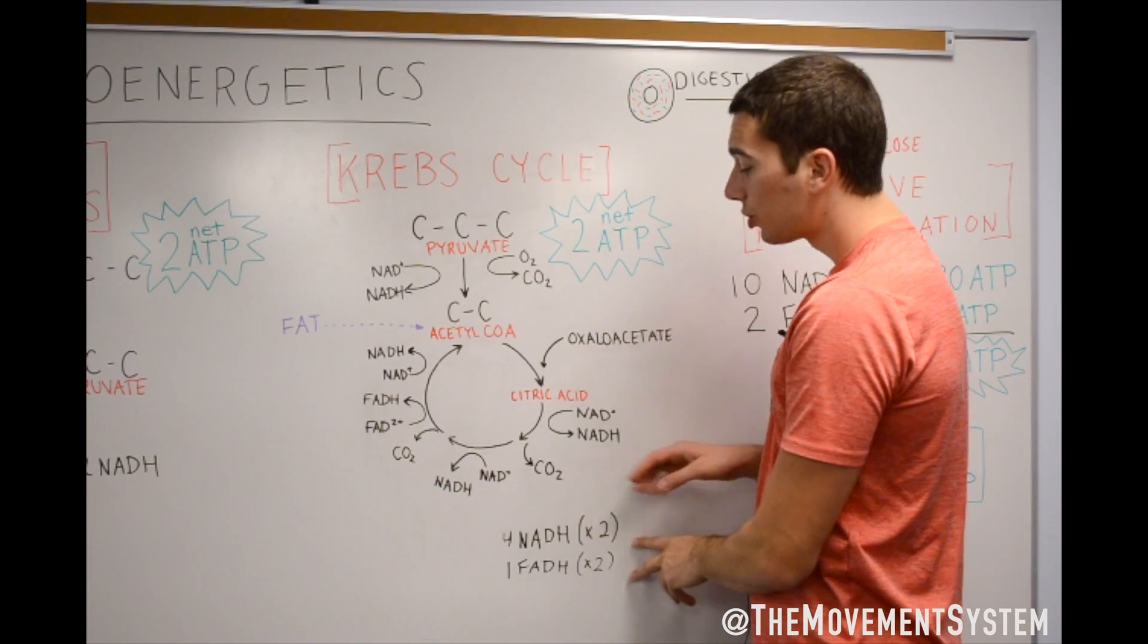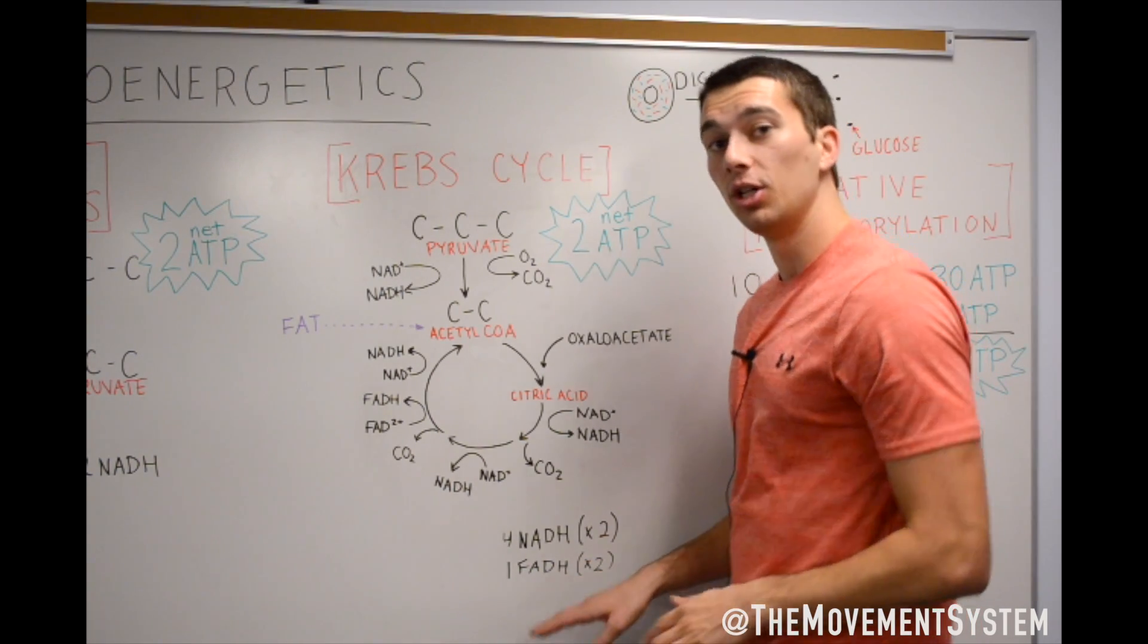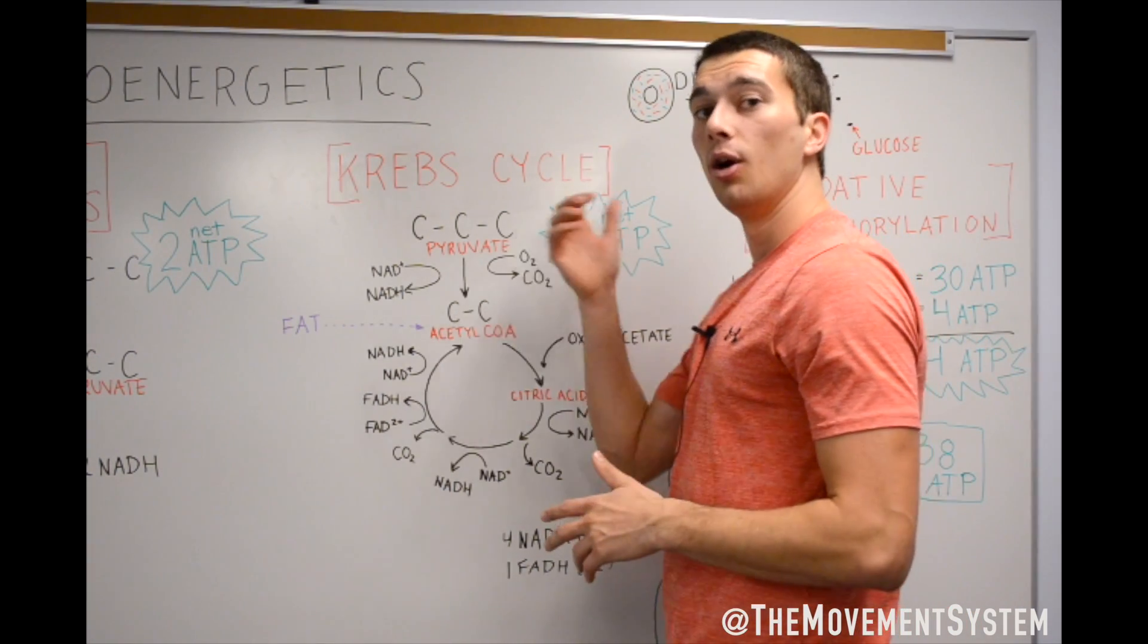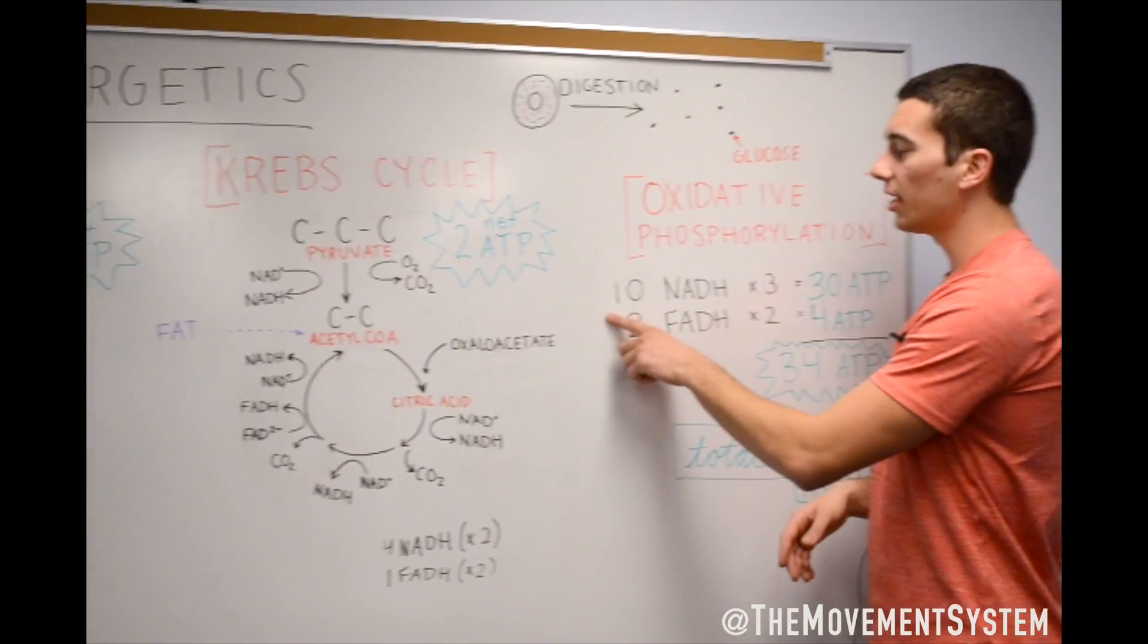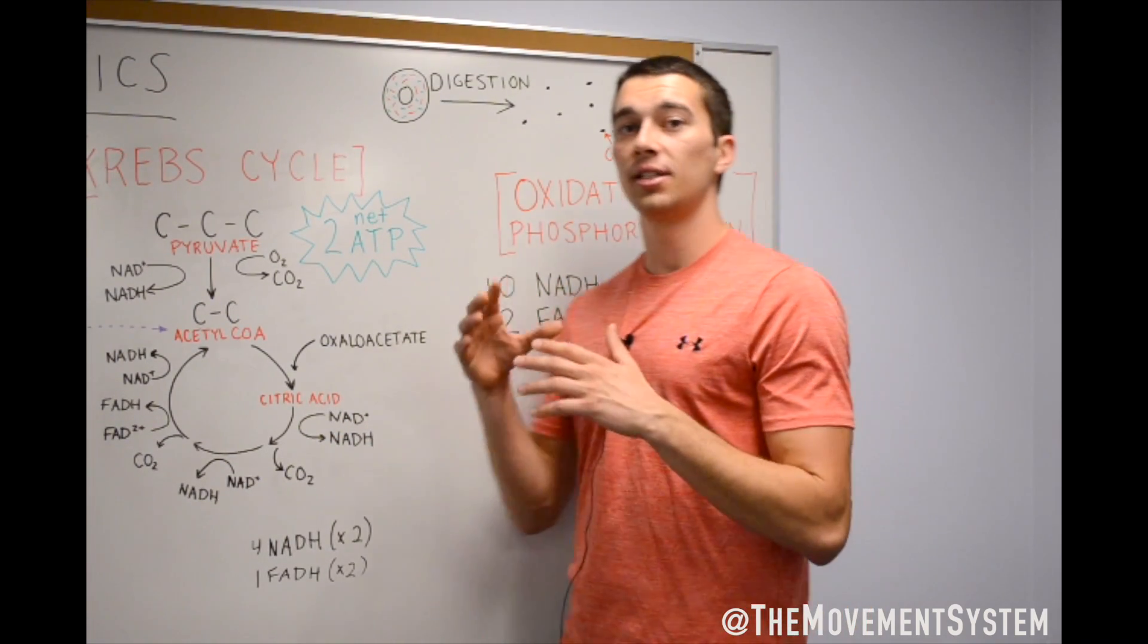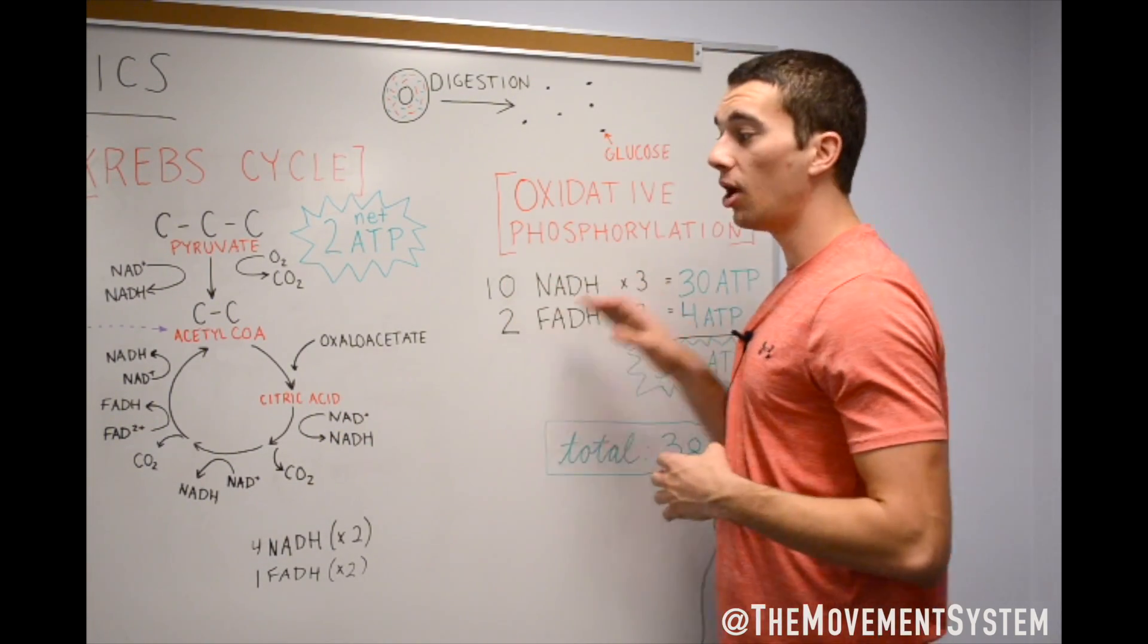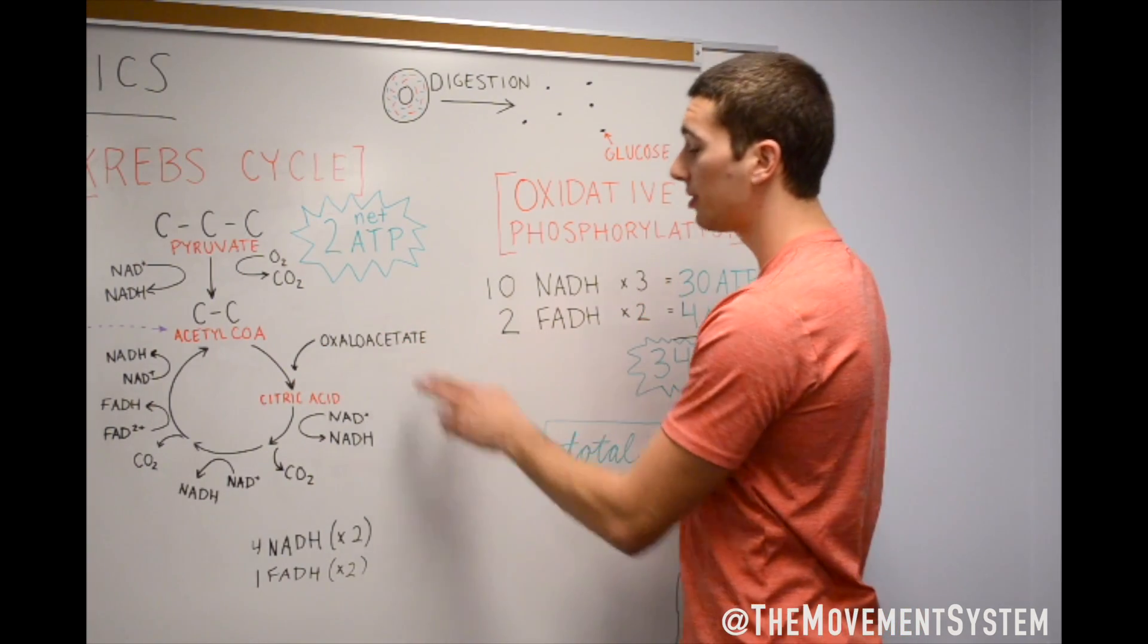So, we also are getting these NADHs and this FADH. That is what we're going to use in the very last step here, which is what we call oxidative phosphorylation. In oxidative phosphorylation, the whole point of this step is just oxidizing all of these molecules that we made in the other steps. So, in the Krebs cycle, we made four NADHs.